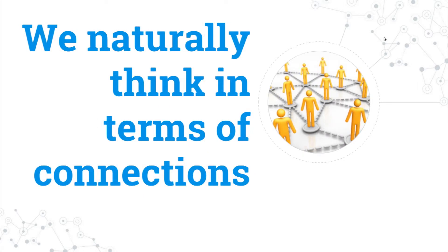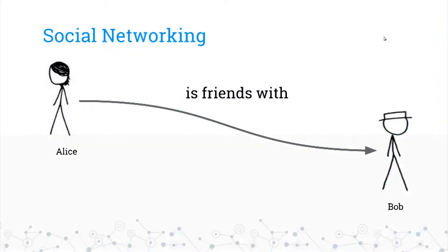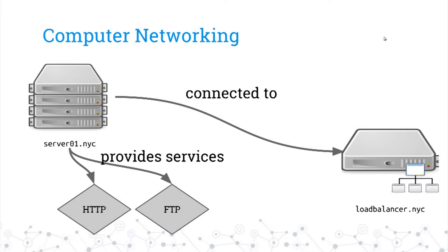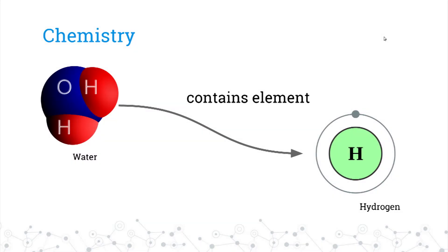Part of what makes graphs interesting is we naturally think in terms of connections. And there are so many different verticals in which this makes a lot of sense in computer science and all the things we do in our day jobs, like social networking — Alice is friends with Bob — computer networking, build targets, dependency graphs, all sorts of things like that. Chemistry, biology. There are so many different avenues that this can actually be really useful.